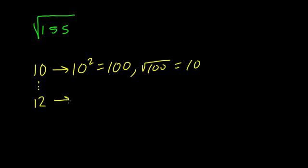If I go up to 12, I square that. 12 squared is 144, and we're much closer now. The square root of 144 is 12. But the square root of 155 is greater than the square root of 144.